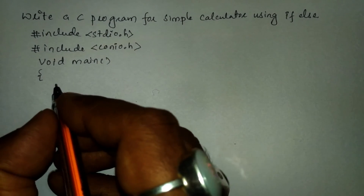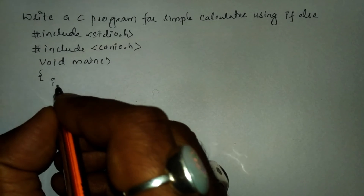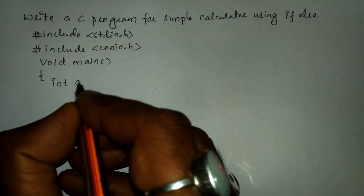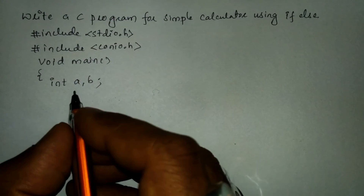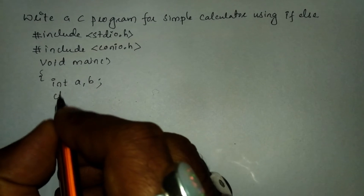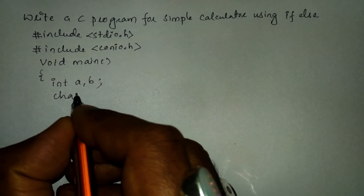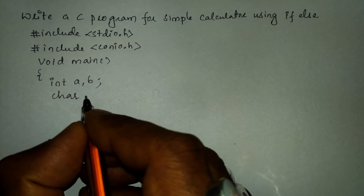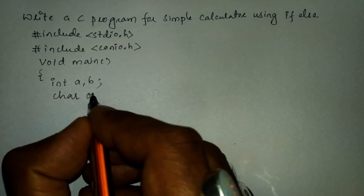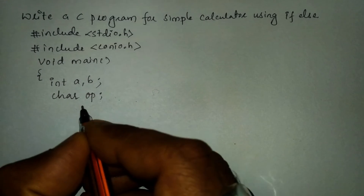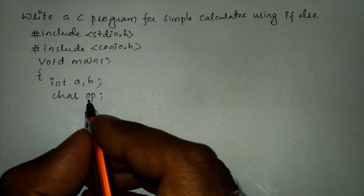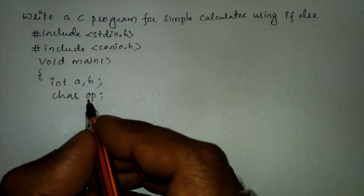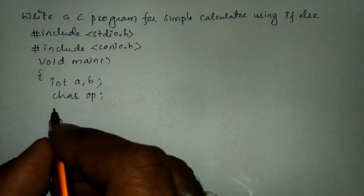Here I am going to declare two variables of type integer: a comma b. Now let us declare one more variable of type char, that is op. op represents the operator, and it is a character type.